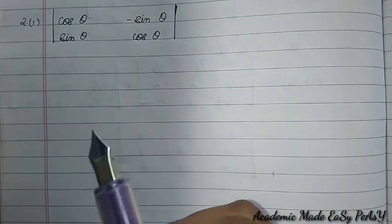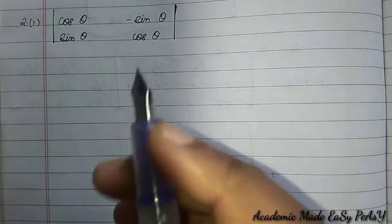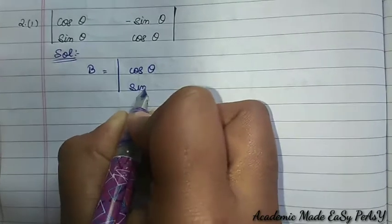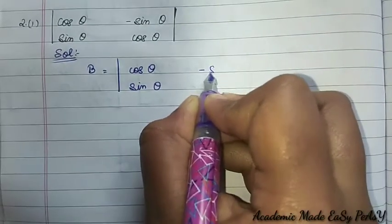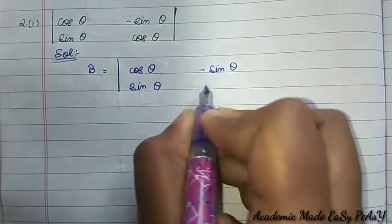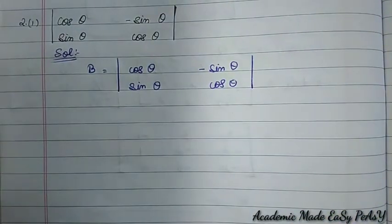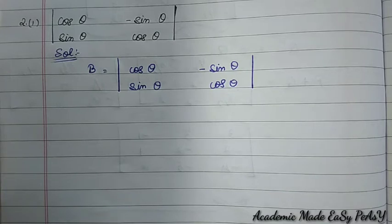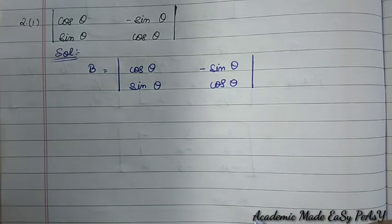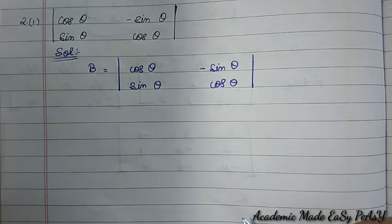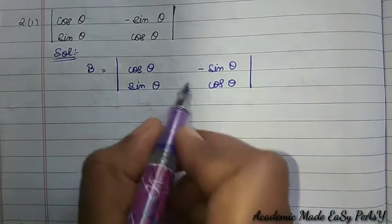Question 2, subdivision 1: a determinant is given. Let the determinant be B, equal to [cos θ, sin θ; −sin θ, cos θ]. As I mentioned previously, when we have trigonometric sums the answer usually ends with 0 or 1. Let's evaluate using the x method directly.